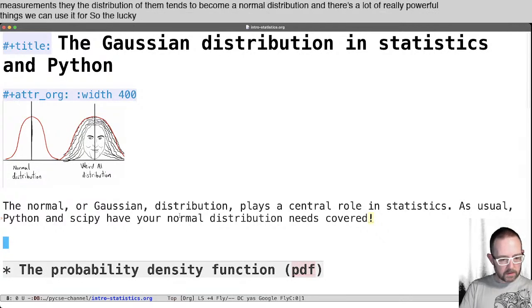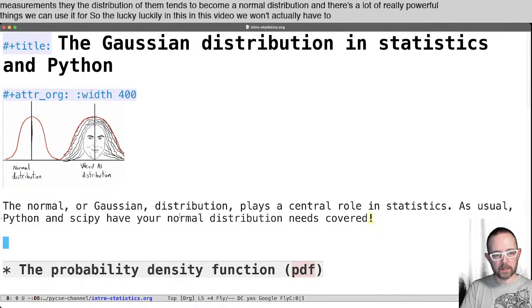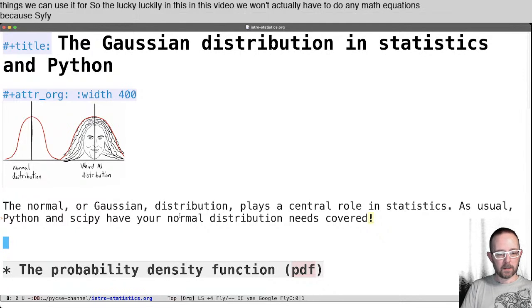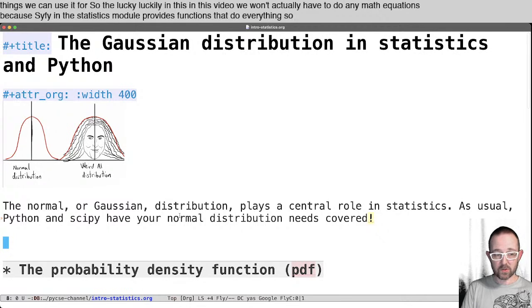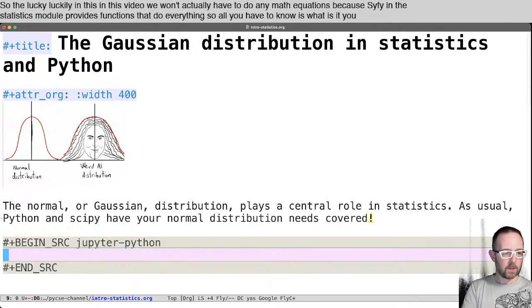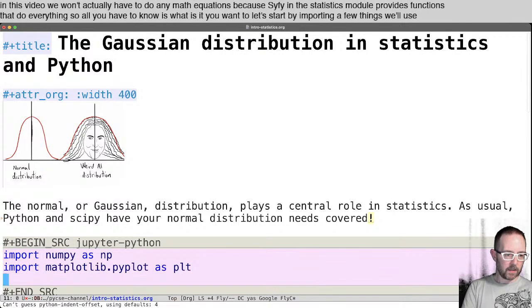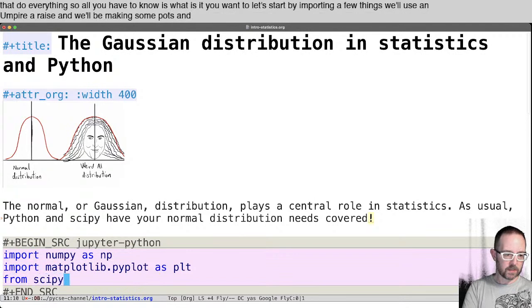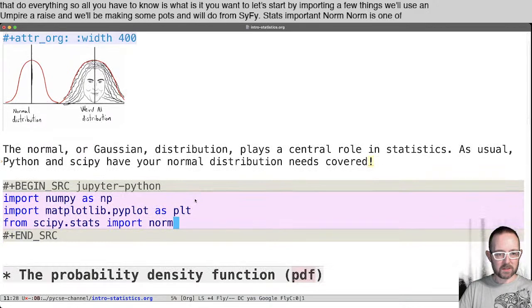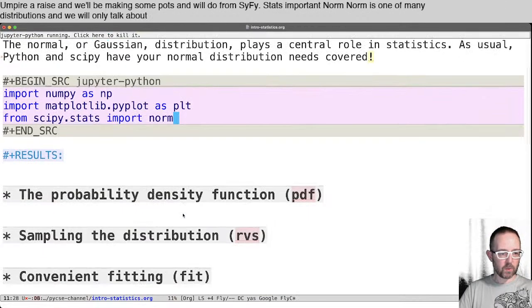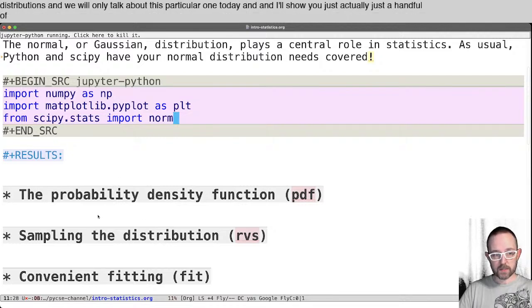So luckily in this video we won't actually have to do any math or equations because SciPy in the statistics module provides functions that do everything, so all you have to know is what is it you want. So let's start by importing a few things. We'll use numpy arrays, and we'll be making some plots, and we'll do from scipy.stats import norm. Norm is one of many distributions, and we will only talk about this particular one today, and I'll show you just a handful of the features that it has.